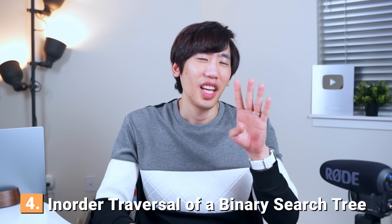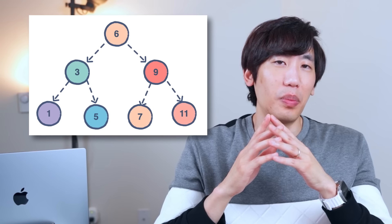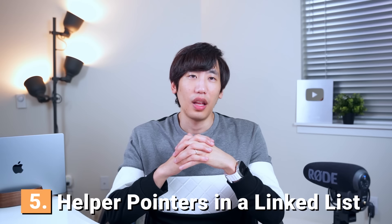Tip four: In-order Traversal of a Binary Search Tree. A BST is a binary tree where the left child is smaller and the right child is greater than its parent. What many people forget is that the in-order traversal of a BST visits all nodes in ascending order. You can use this property to validate whether a tree is a BST and retrieve its values in sorted order. Tip five: Helper Pointers in a Linked List. If pointer calculations mess up your code, create a dummy node and link it to the head to simplify your logic. Also use slow and fast pointers to find the middle or nth node.